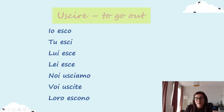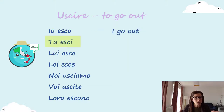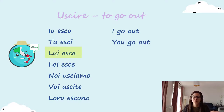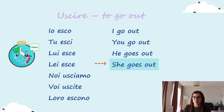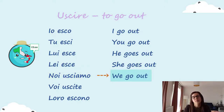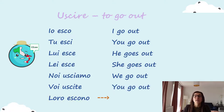And we have uscire. Uscire is to go out. Io esco — I go out. Tu esci — you go out. Lui esce — he goes out. Lei esce — she goes out. Noi usciamo — we go out. Voi uscite — you go out. Loro escono — they go out.